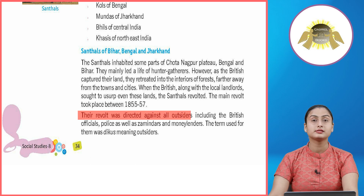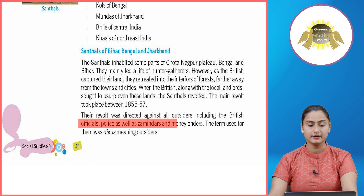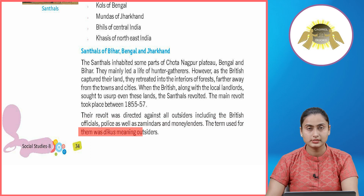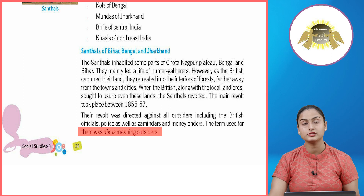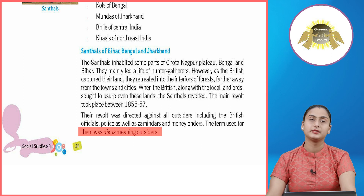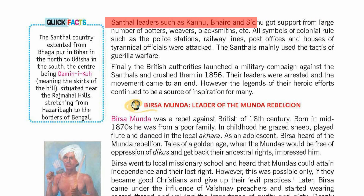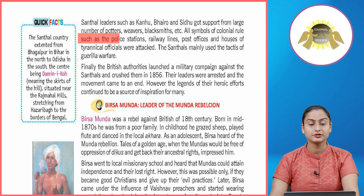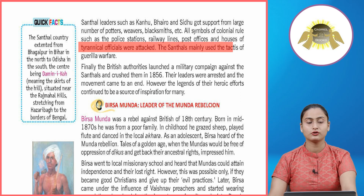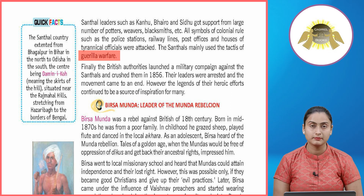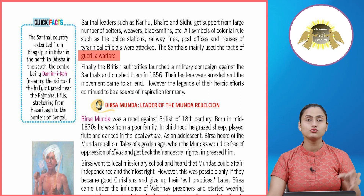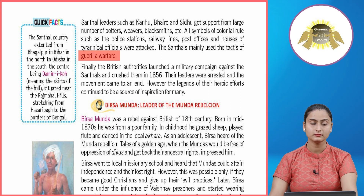The revolt was directed against all outsiders — including British officials, police, zamindars, and moneylenders. The term used for them was diku, meaning outsiders. Santal leaders such as Kanhu, Bheiro, and Sidhu got support from large numbers of potters, weavers, and blacksmiths. All symbols of colonial rule — such as police stations, railway lines, post offices, and houses of colonial officials — were attacked. The Santals mainly used the tactics of guerrilla warfare.